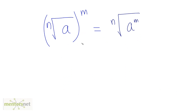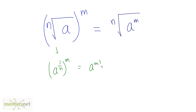The last law: if you have nth root of a whole raised to m, then you can write it as nth root of a raised to m — you can put the m inside the nth root. To show this: a raised to 1 by n raised to m equals a raised to m by n, which is the nth root of a raised to m. Remember these laws to solve and simplify various expressions involving indices or nth roots.